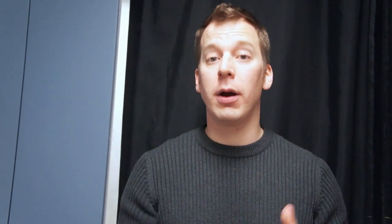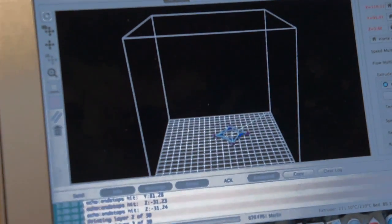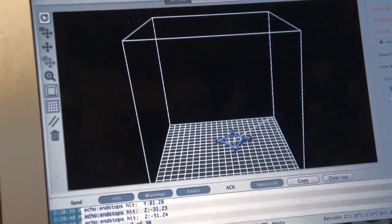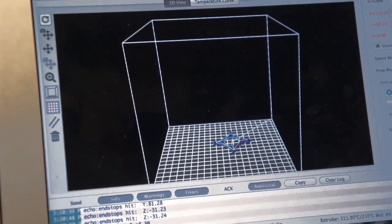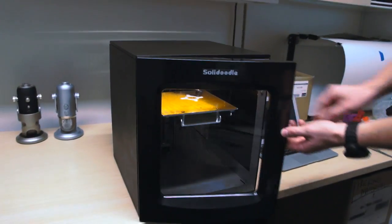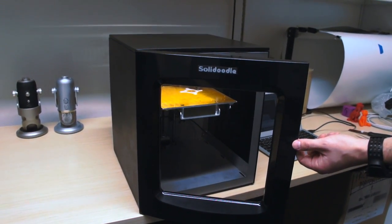The Solidoodle 4 is even easier to use than our previous printers to date. We've put a lot of time and energy to abstract away the difficulties of using a 3D printer and to make it even more polished, to give it clean and simple lines and make it even easier to use.